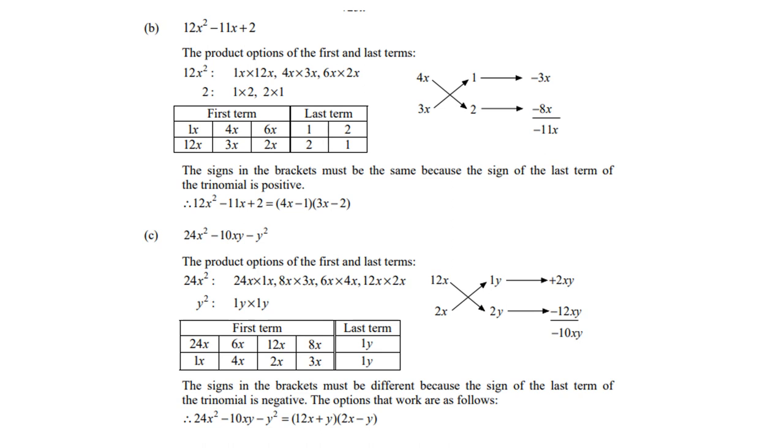If I cross multiply, I get negative 3x and negative 8x, which is negative 11x. That's what I'm looking for. And then the signs in the brackets must be the same, because the sign of the last term of the trinomial is positive. So, there you are: 4x minus 1, 3x minus 2.